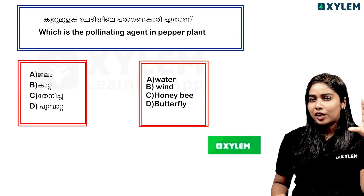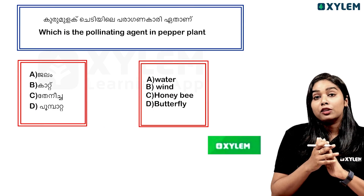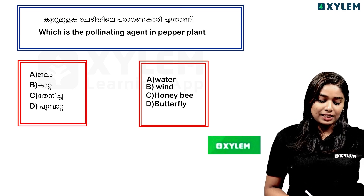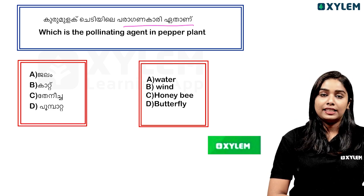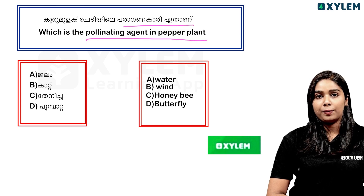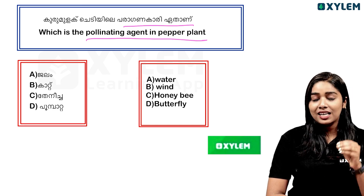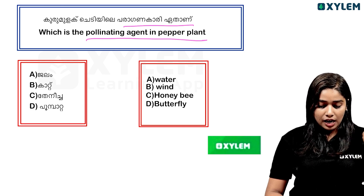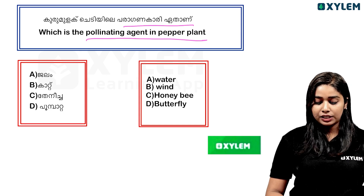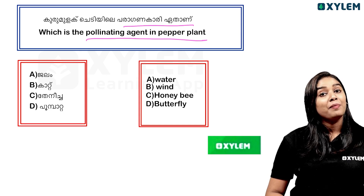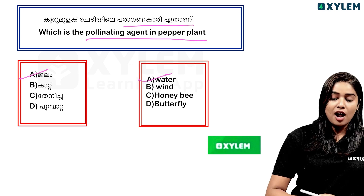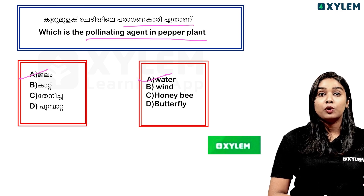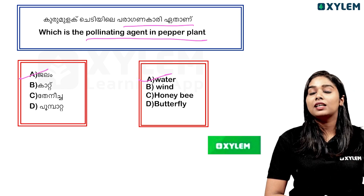The next question is from biology. We will try to teach about human beings and the body. Which is the pollinating agent in the pepper plant? This is an important concept related to plant biology.